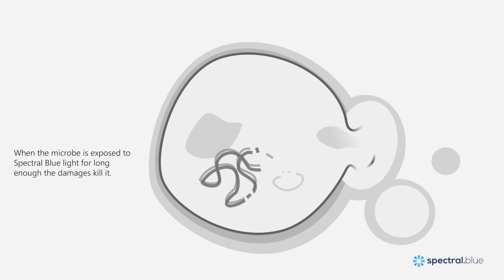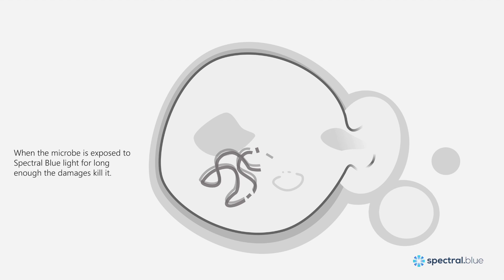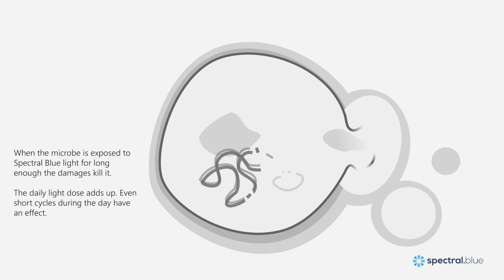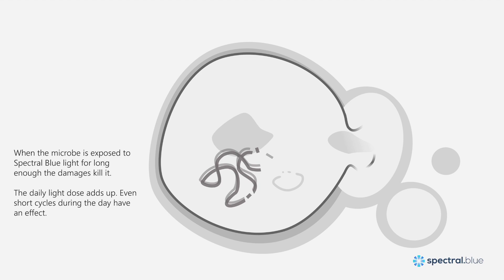Because the damage is so unspecific and targets so many different parts of the cell, it is considered unlikely for microbial cells to be able to repair all the damage at once and develop resistance against Spectral Blue. Switching Spectral Blue on and off during the day adds up to the total daily light dose, and several short illuminations throughout the day will have an effect on the overall microbial load. The more you can use Spectral Blue during the day, the faster you will kill the microbes.